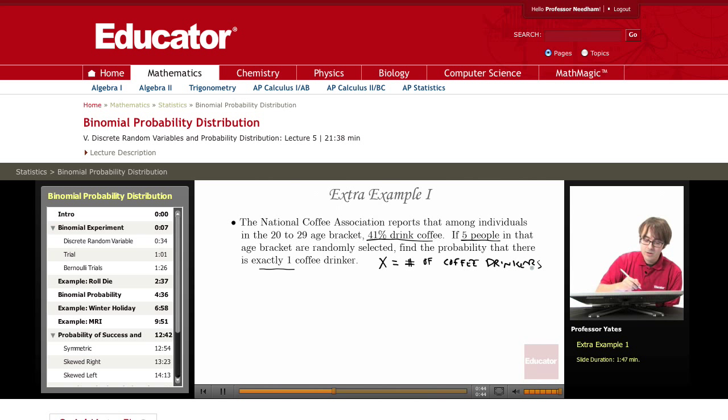Remember that the parameters of a binomial are p, the probability of success, which is 0.41. And we need to know the number of trials. A trial here is that we're randomly selecting a coffee drinker. So, n is going to be equal to five.